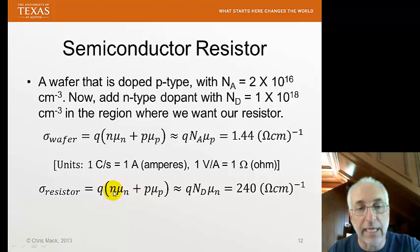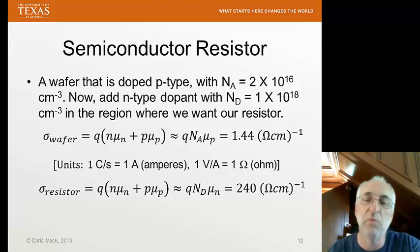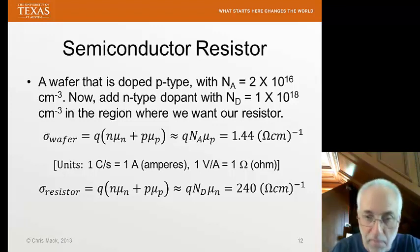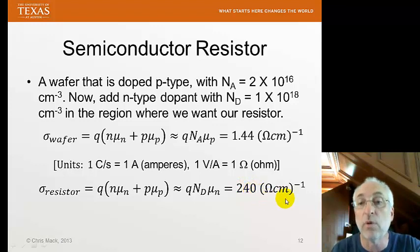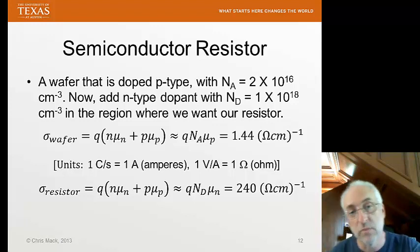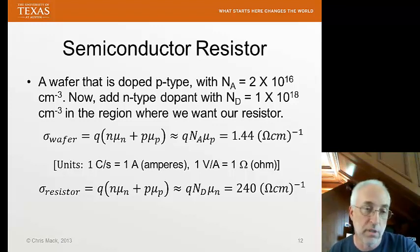In the material where we add our extra N-type dopant, that is the region where we're going to make our resistor, the number of free electrons will dominate the number of free holes. So this term is insignificant, P times mu sub P. And the only thing we have left is N times mu sub N. And N is about equal to the concentration of the donors, or to be more exact, ND minus NA. So we plug in the values here, and we get about 240 per ohm centimeters for the conductivity of the region that we're doping, which we're going to make our resistor out of. So you see that the conductivity is higher by about a factor of 200 in this region.